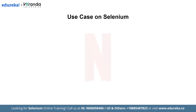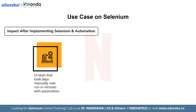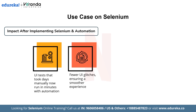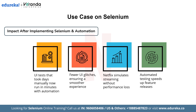Let us have a look at the impact after implementing Selenium and automation. First is faster testing and deployment — UI tests that took days manually now run in minutes with automation. Next, improved user experience: fewer UI glitches in login, video streaming and subtitles, ensuring a smooth experience for millions. In terms of scalability and stability, Netflix can simulate thousands of users streaming in different environments without performance degradation. And in terms of continuous deployment and innovation, automated testing allows Netflix to release features faster without worrying about breaking the UI.